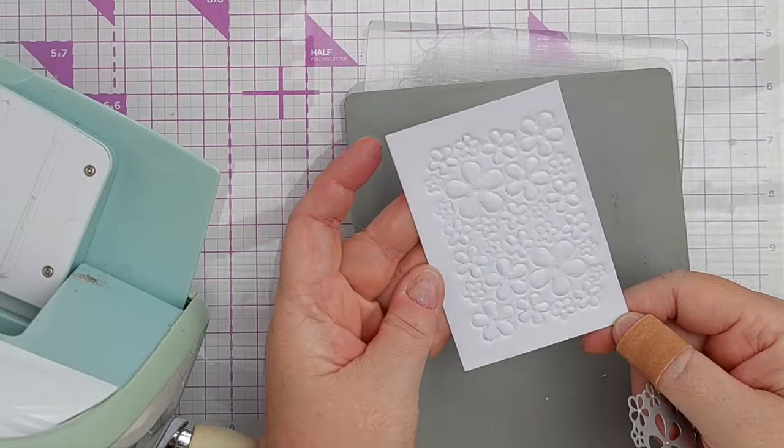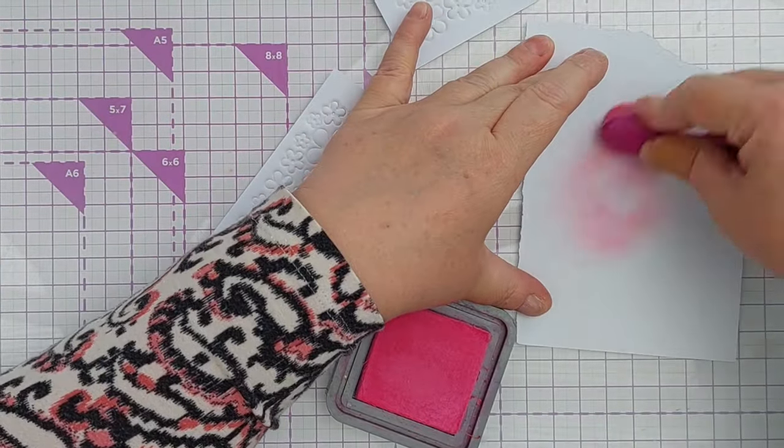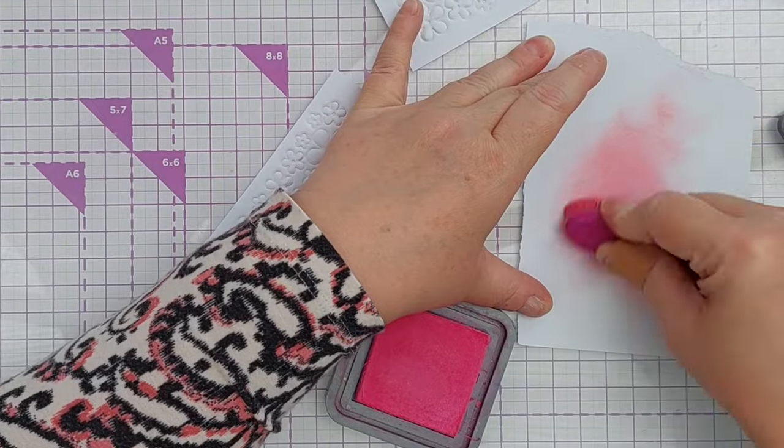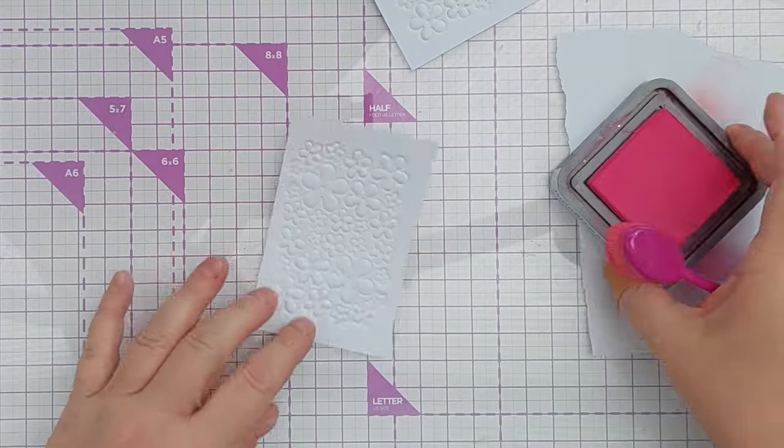So I did that twice and then on one piece I took some picked raspberry distress oxide and gently brushed it over the embossed flowers.